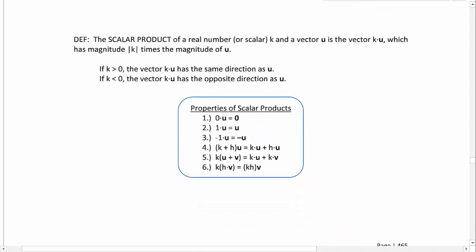The scalar product of a real number, which is also called a scalar number, the scalar product of a real number k and a vector u is the vector ku, which has a magnitude that is the absolute value of k times the magnitude of u. If k is greater than zero, the vector ku has the same direction as u, but if the k value is less than zero or negative, the vector ku has the opposite direction of u.